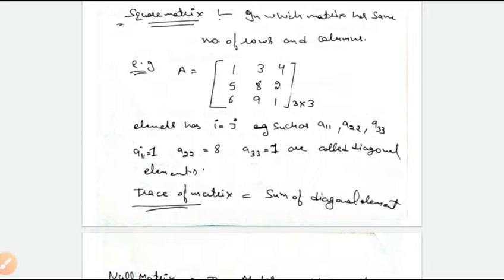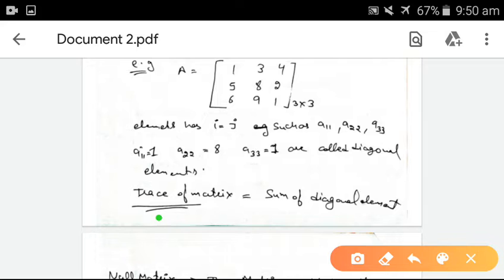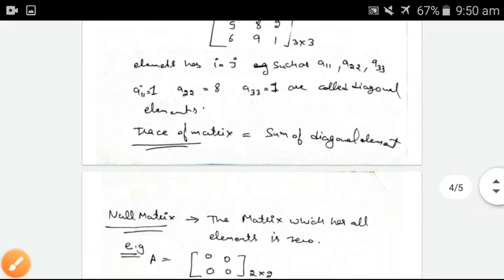In a square matrix, i equal to j means the row number and column number are the same. For example, A11, A22, A33 are diagonal elements — elements which have the same row number and column number. The trace of a matrix is the sum of the diagonal elements.